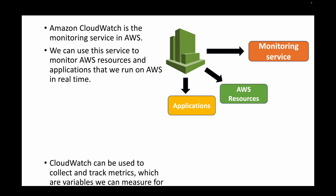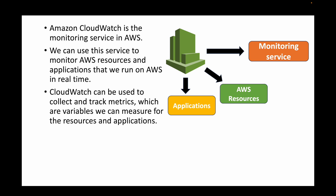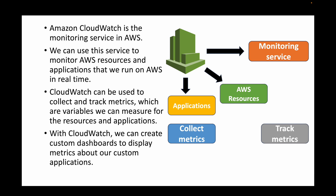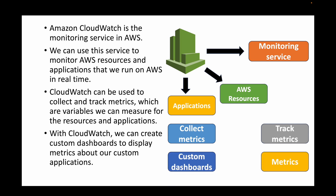CloudWatch can be used to collect metrics — for example, in terms of your EC2 instance: CPU utilization, disk reads, disk writes. All those metrics can be collected and we can keep track of them over time, like the last seven days of CPU utilization. These metrics are simply variables used to measure how you are utilizing resources or how the application is behaving in terms of resource utilization.